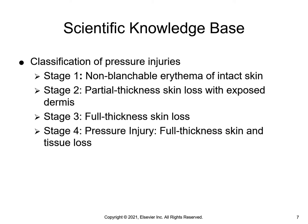A stage one pressure injury is non-blanchable erythema of intact skin. The intact skin has a localized area of non-blanchable erythema and it may appear differently in dark pigmented skin. The presence of blanchable erythema or changes in sensation, temperature, or firmness may precede visual changes. Color changes do not include purple or maroon discolorations, as these may indicate a deep tissue pressure injury.